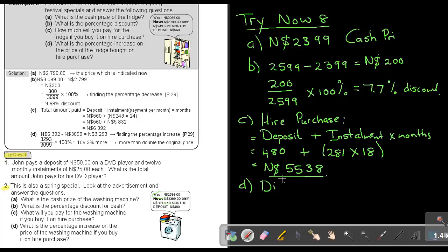To find the difference, take $5,538 minus $2,399, giving $3,139.